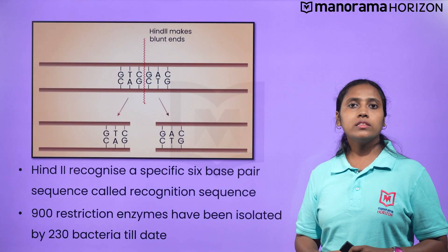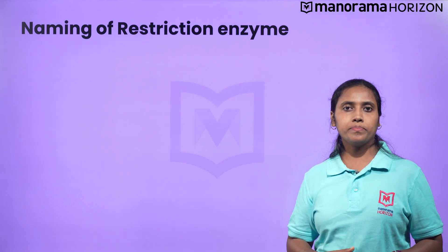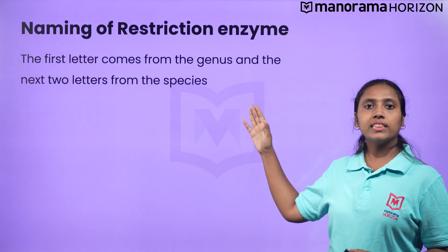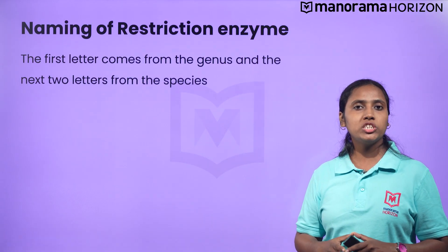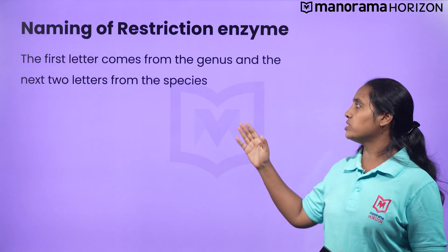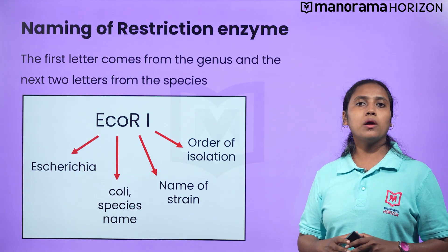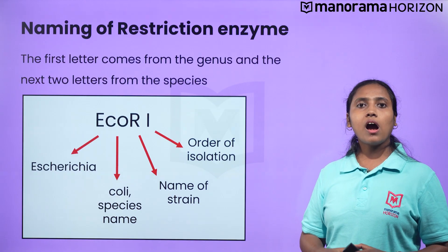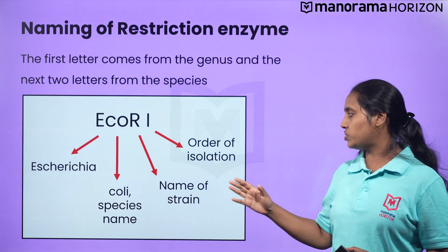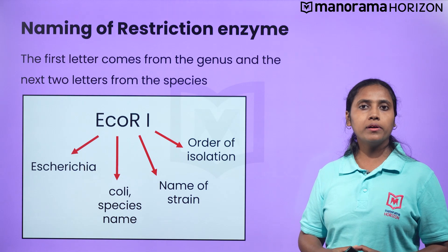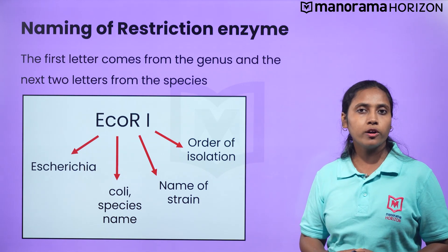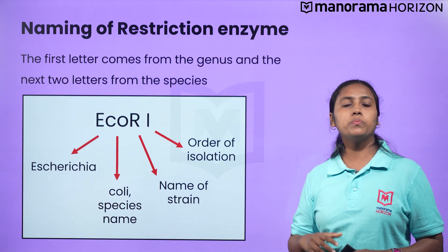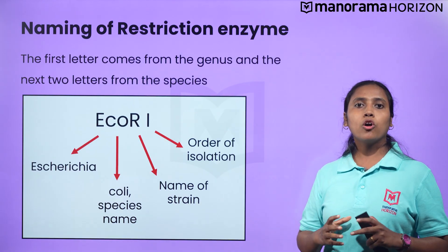Let's now see the naming of restriction enzymes. Generally, the first letter of these enzymes comes from the genus and the second two letters come from the species of the bacterial cell from which they are isolated. For example, EcoRI comes from E. coli RY13. The letter R is derived from the name of the strain and the Roman numeral indicates the order in which the enzymes were isolated from that strain of bacteria.